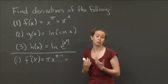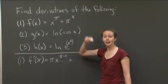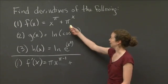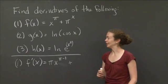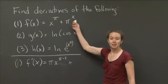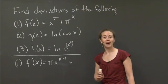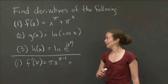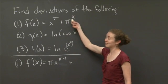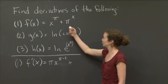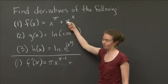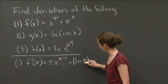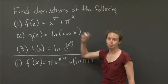The whole point of this problem is to make sure you recognize that pi to the x is not a power-of-x rule — it's actually an exponential function with base pi. So if you wrote the derivative of this term as x times pi to the x minus 1, you would not be alone, but that is not correct. Because x is the power here, this is an exponential function. Its derivative requires the exponential rule: natural log of pi times pi to the x.